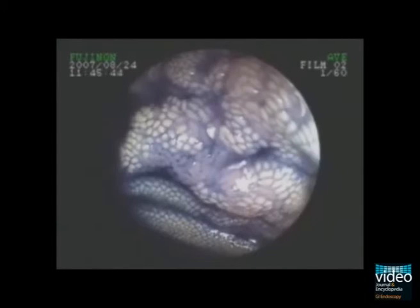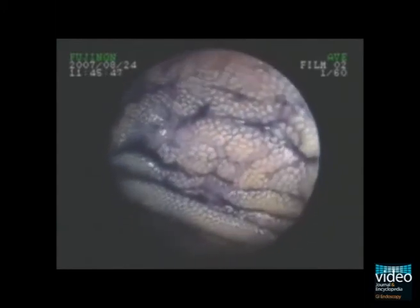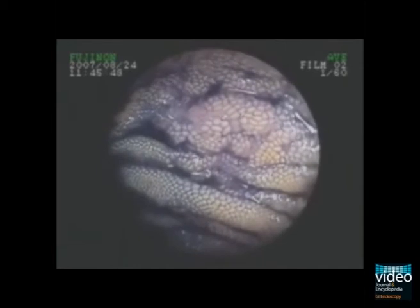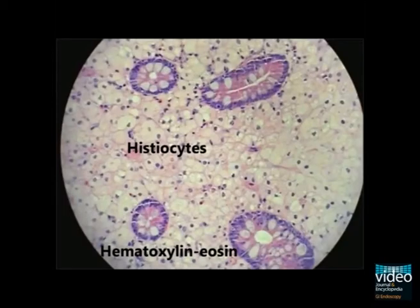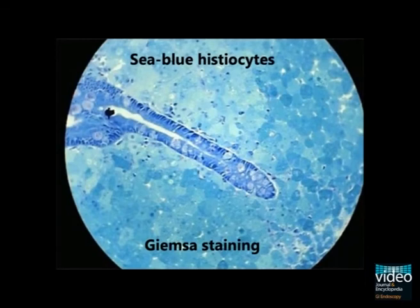Biopsy samples of the lesions with hematoxylin eosin staining identified subepithelial macrophages because of the accumulation of lipofuscin, glycophospholipid, and sphingomyelin. May-Grünwald staining revealed sea-blue macrophages, which is why this condition is named sea-blue histiocytosis.